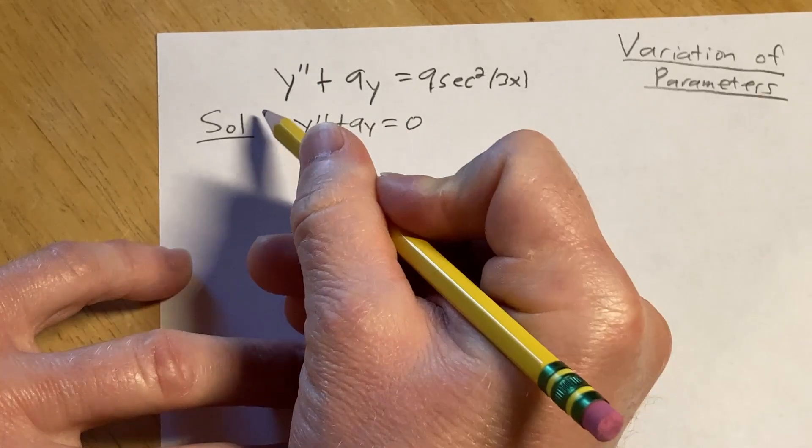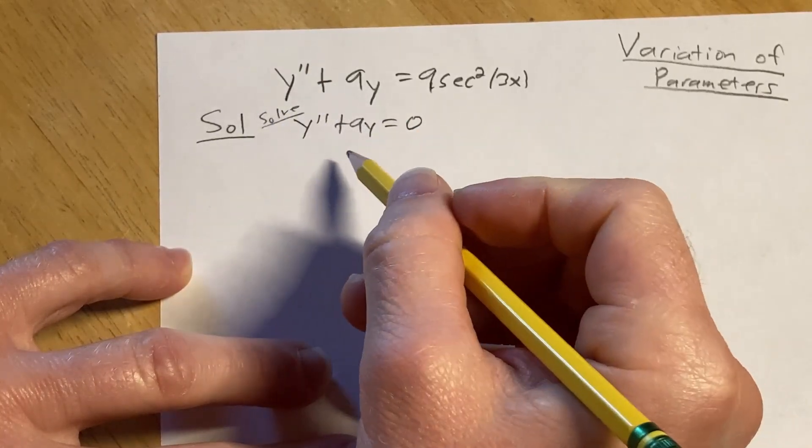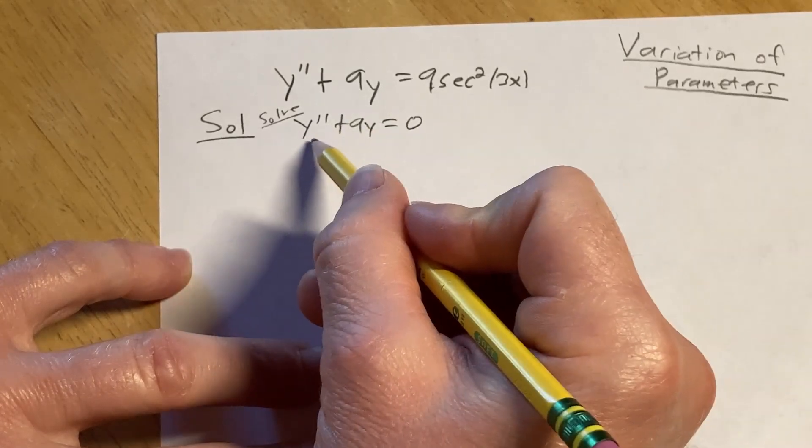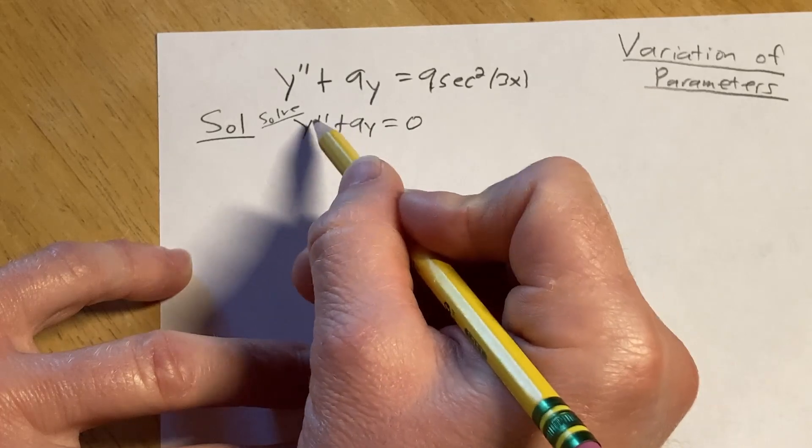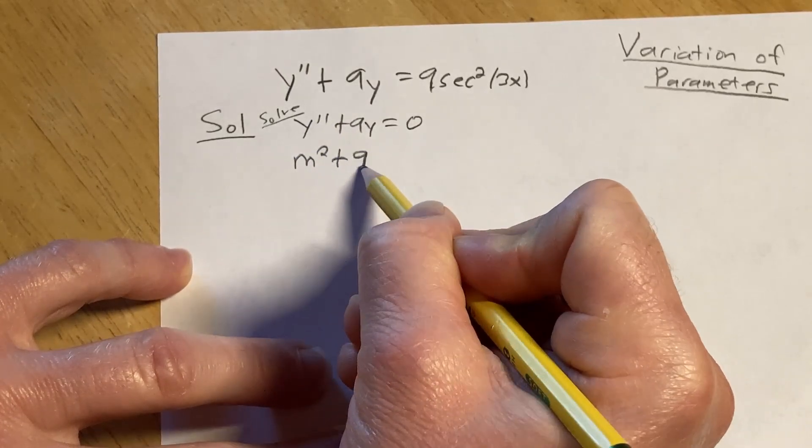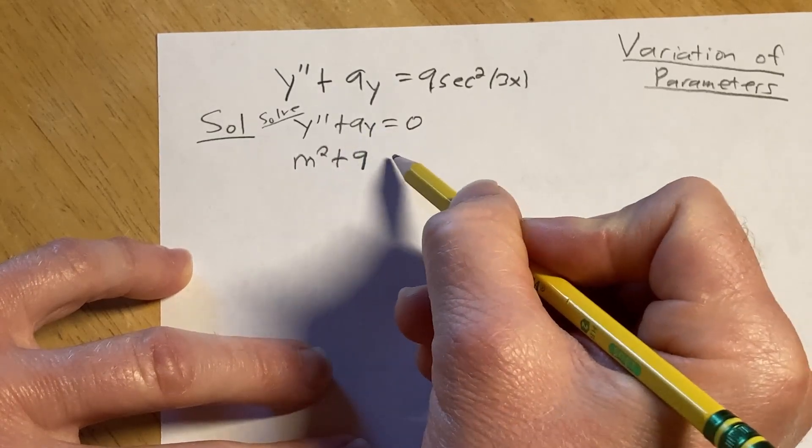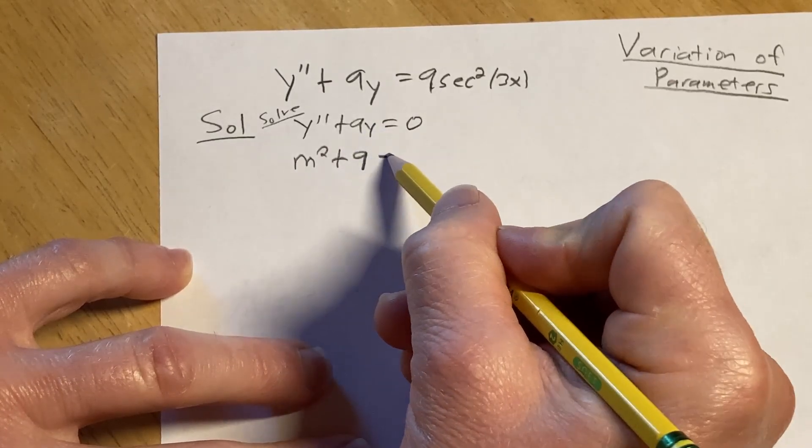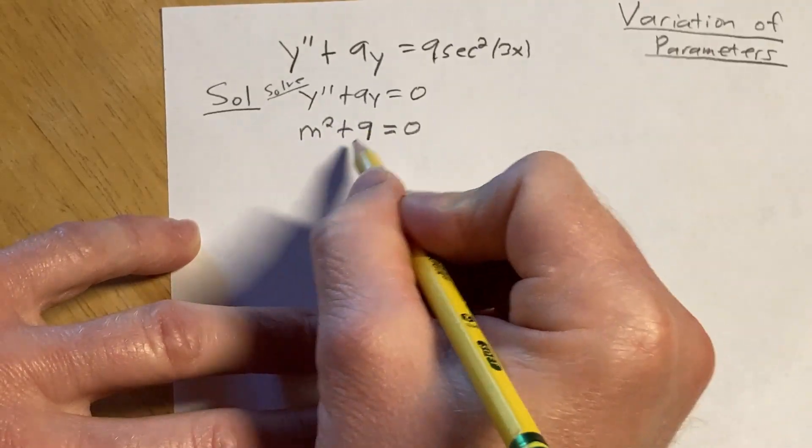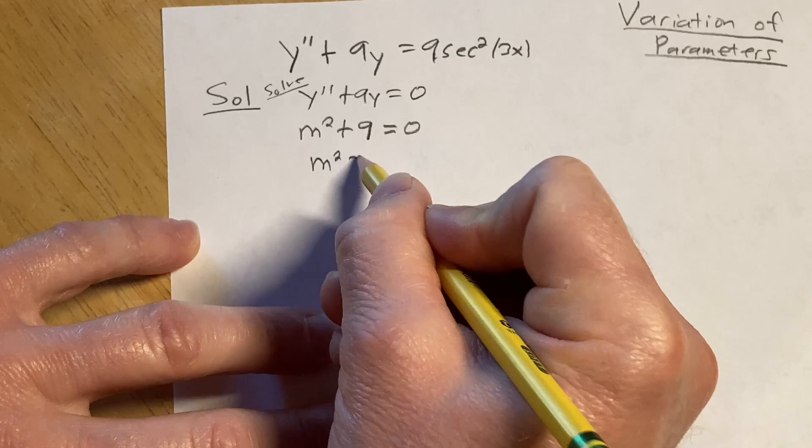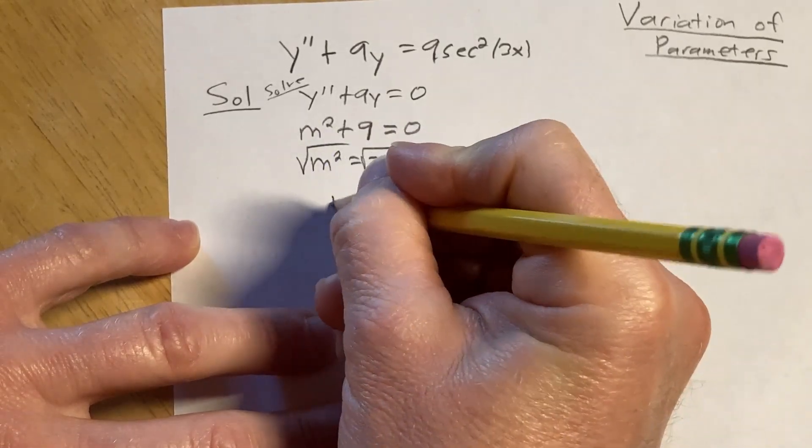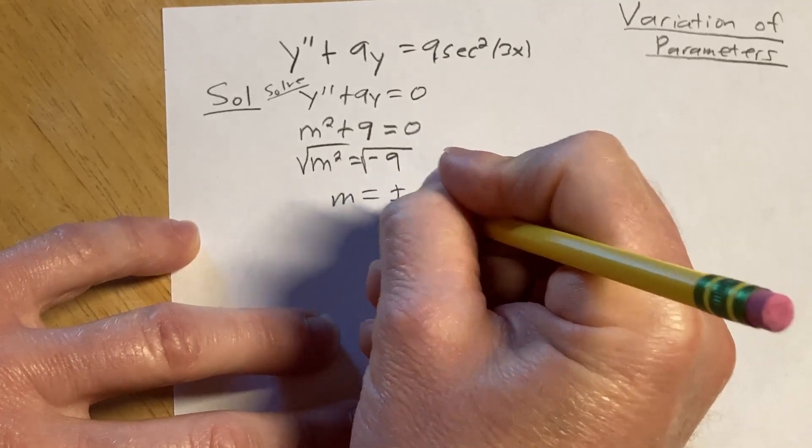To solve this, you find what's called the characteristic equation or auxiliary equation. So you write down an equation based off the derivative. So this is the second derivative. So it's m squared. Plus nine. Y is the zero-th derivative. So it's m to the zero, which is one. So you don't write it. And you set it equal to zero. This is super easy to solve. You subtract nine from both sides.